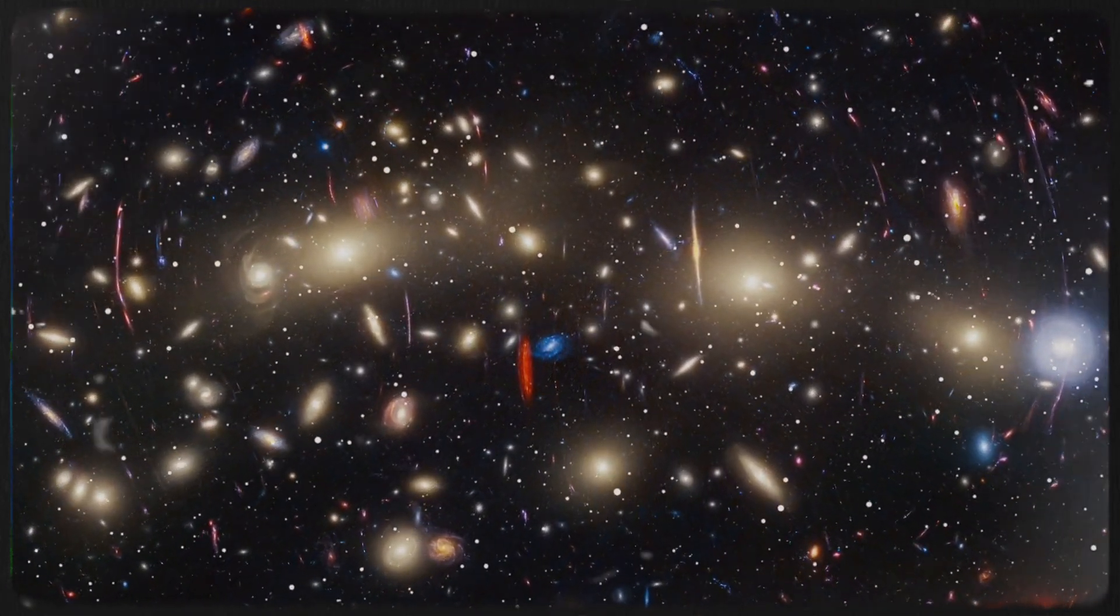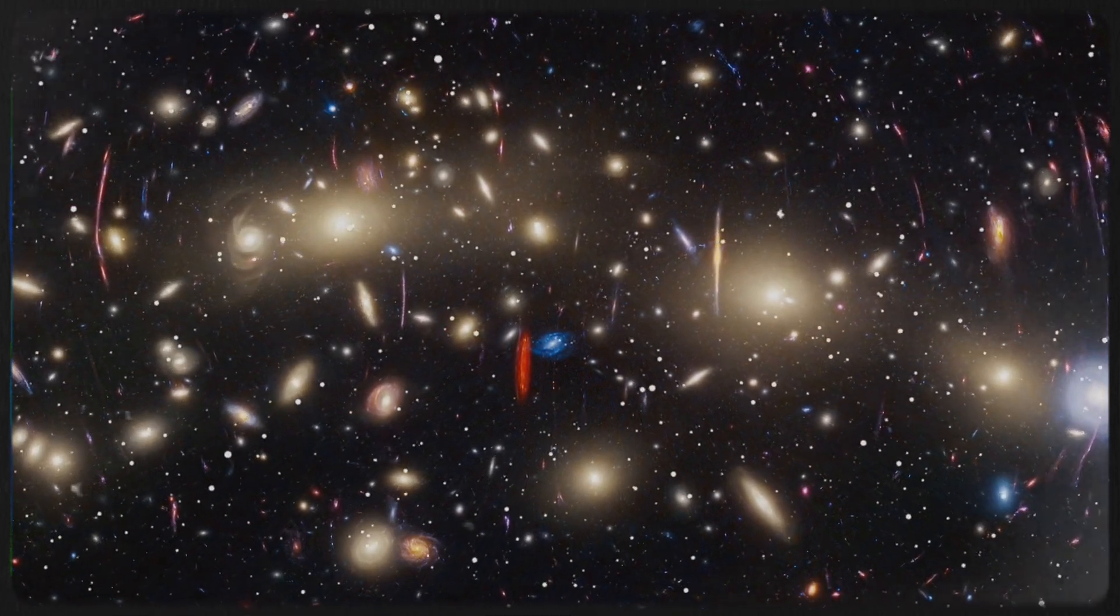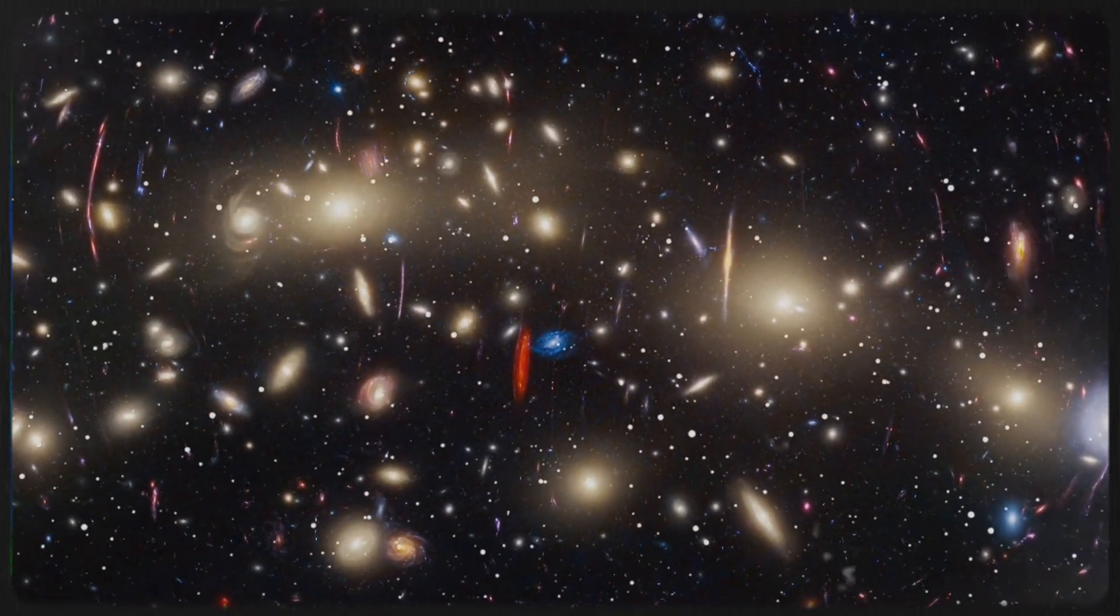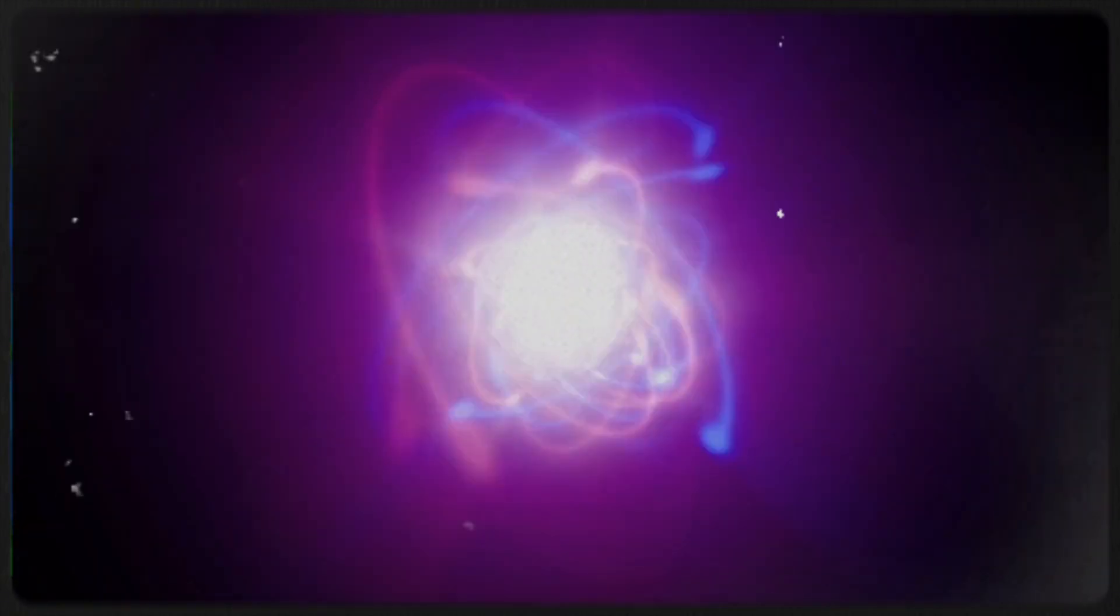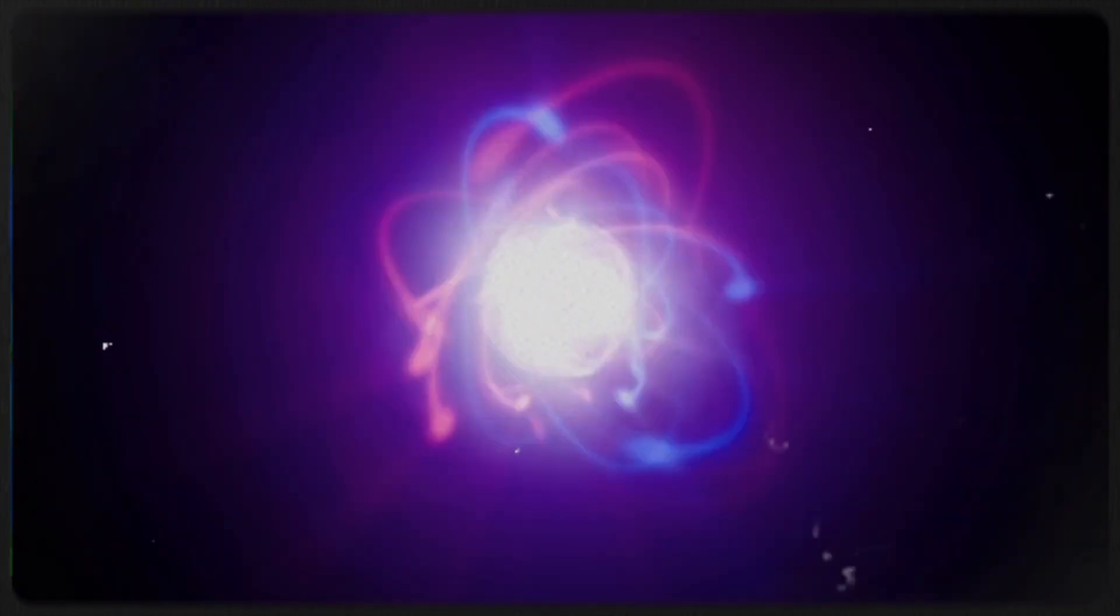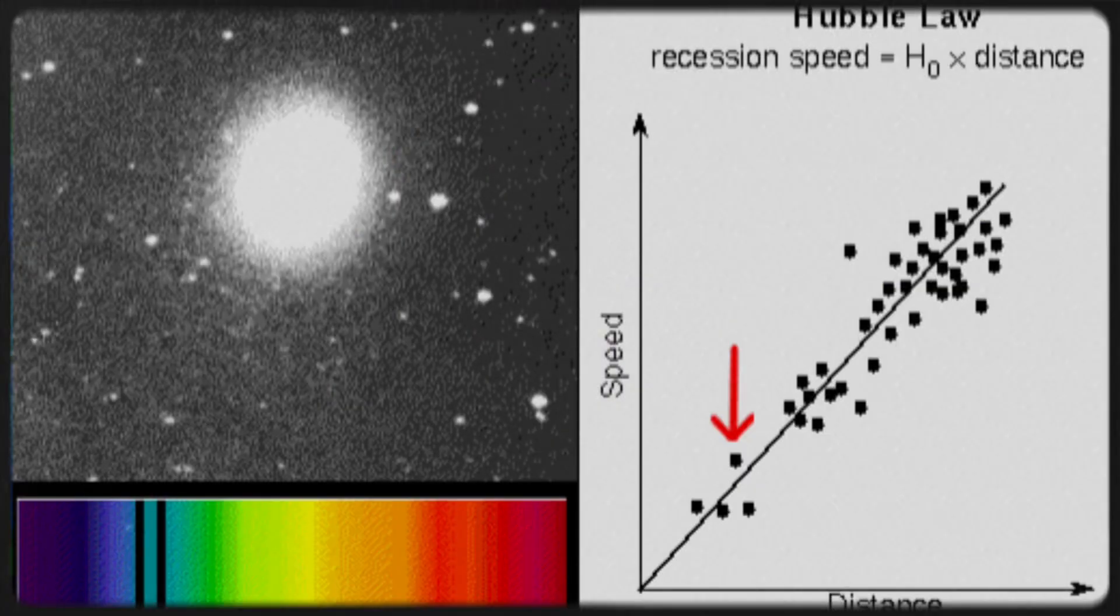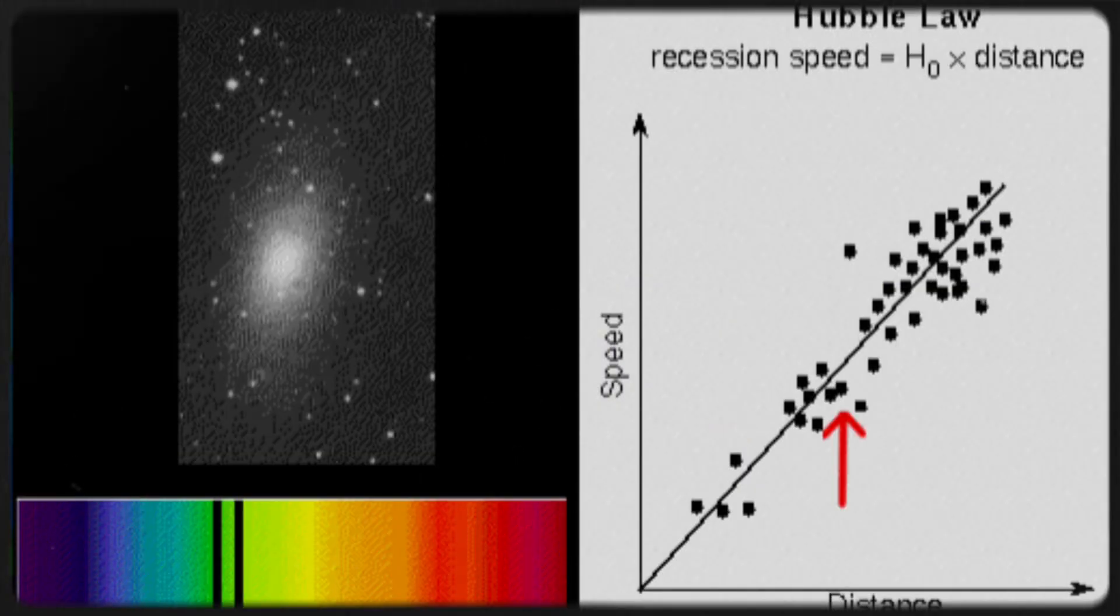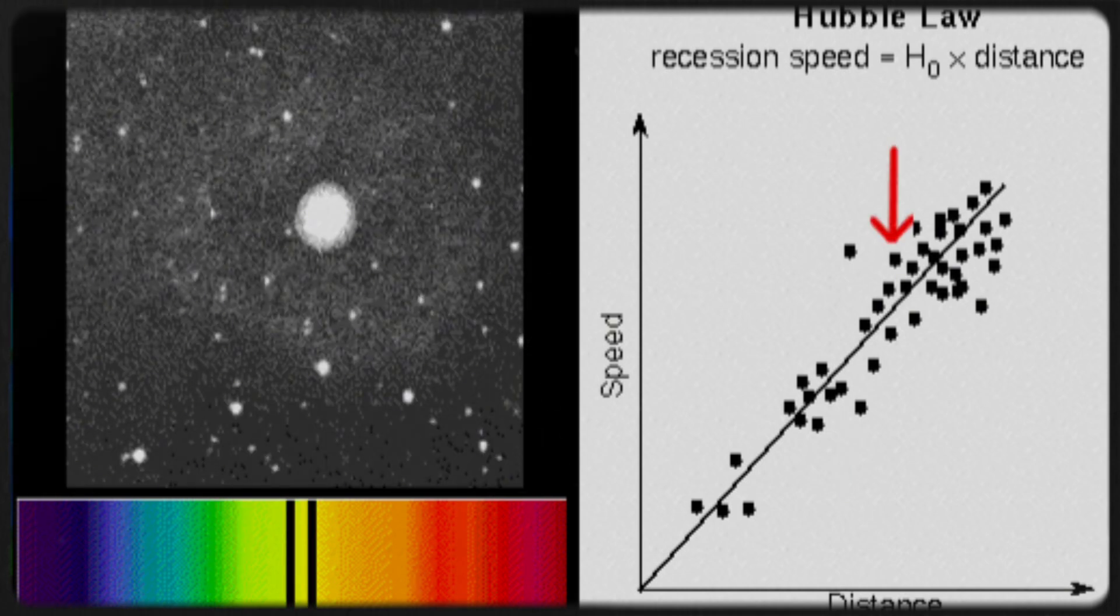Whether it's early dark energy, a twist in gravity, or something we haven't even imagined yet, the universe has more secrets to reveal. Some theories point to the influence of dark radiation or sterile neutrinos, hypothetical particles that only interact through gravity. If these particles existed in the early universe, they could have increased the overall energy density, accelerating expansion, and boosting the Hubble constant.